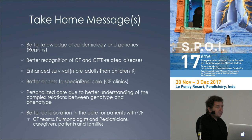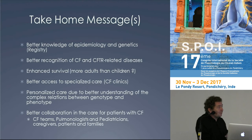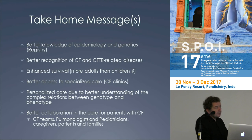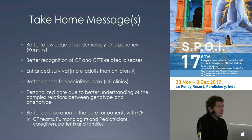Le take-home message : la mucoviscidose est devenue véritablement une maladie de pneumologue d'adulte. On peut faire des diagnostics à l'âge adulte. Il y a de plus en plus d'adultes. On connaît mieux la génétique et certains phénotypes particuliers. La survie a été améliorée de façon extrêmement importante. Dans les pays à bon accès aux soins, on a réorganisé les soins avec des centres de référence — les CF clinics. Grâce à la connaissance des relations entre mutations et protéine CFTR, on a accès pour certains patients à de la médecine personnalisée.